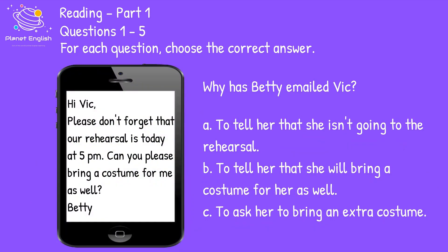Here is our second question. Remember, read the instructions first. Why has Betty emailed Vic? Hi Vic — so this is for Vic. Who has written this email? That is Betty. 'Hi Vic, please don't forget that our rehearsal is today at 5pm. Can you please bring a costume for me as well? Betty.' So this is from Betty to Vic. Now let's have a look at the keywords in the text: 'don't forget, our rehearsal is today at 5pm' and 'bring a costume for me'.